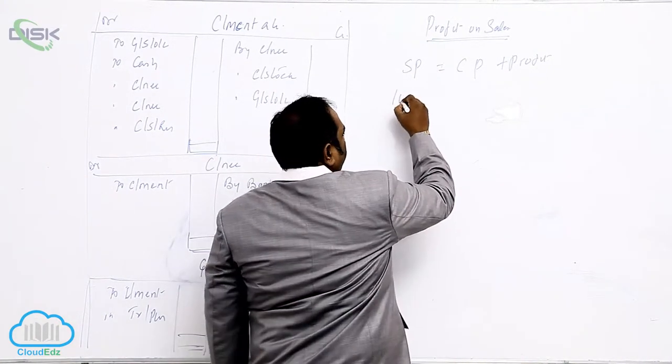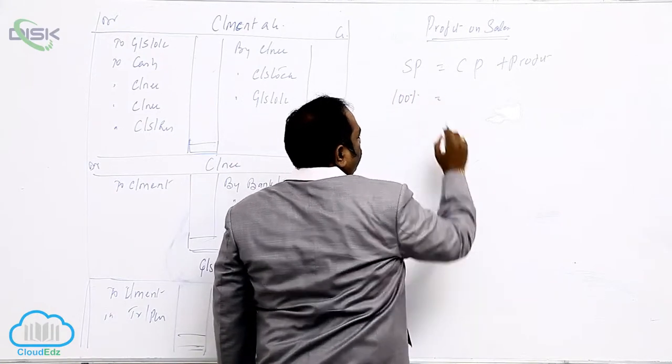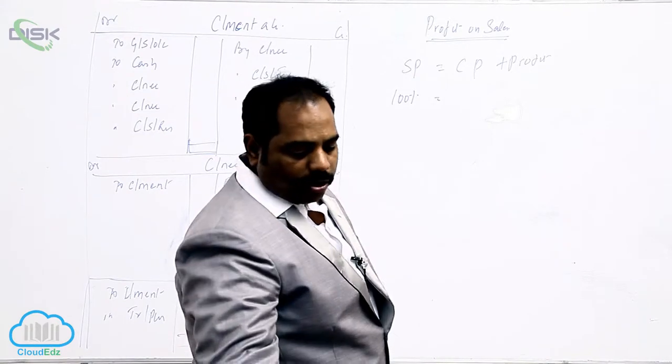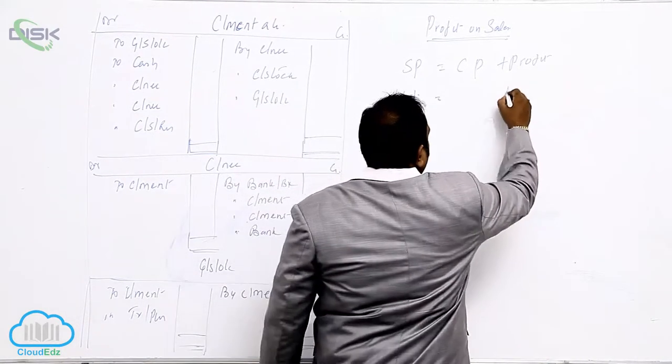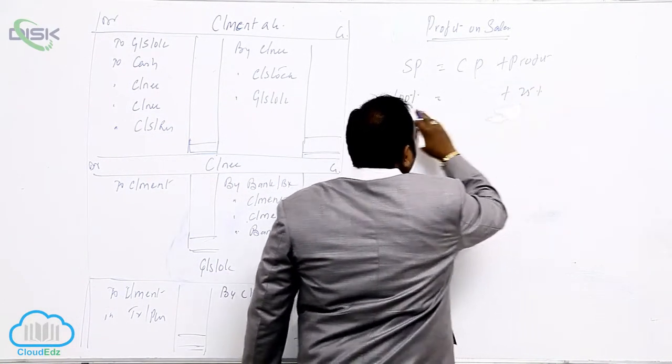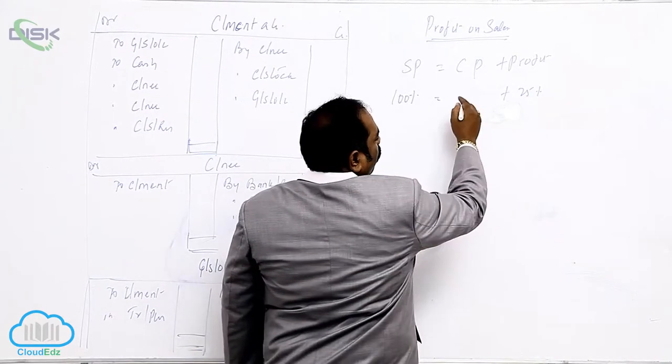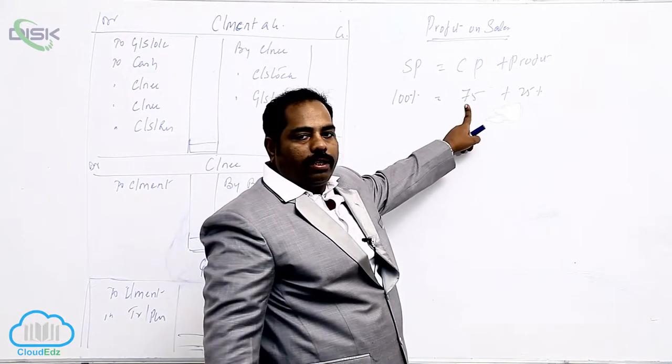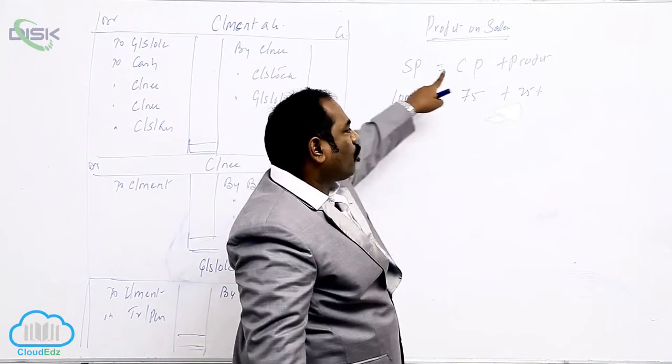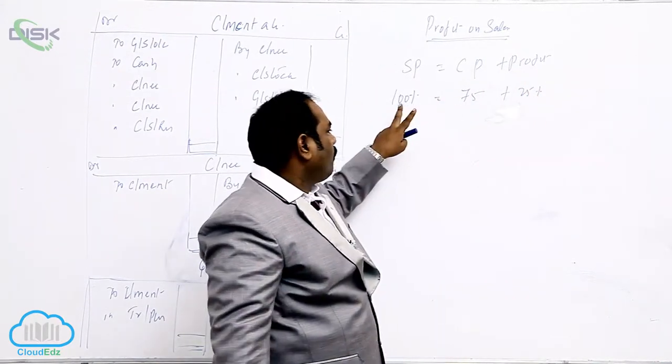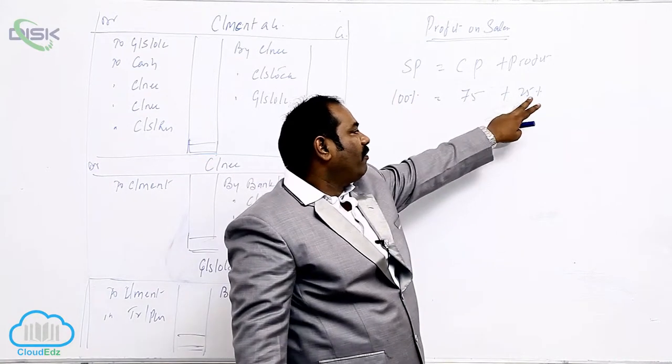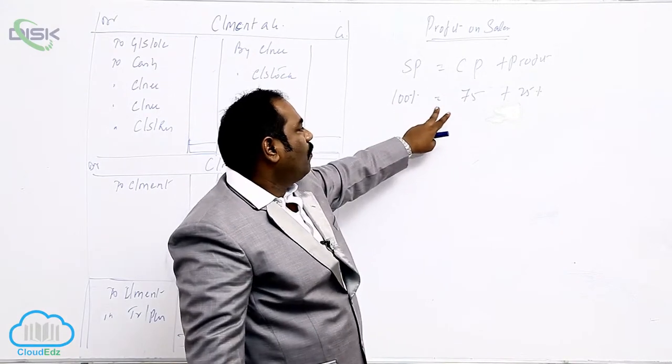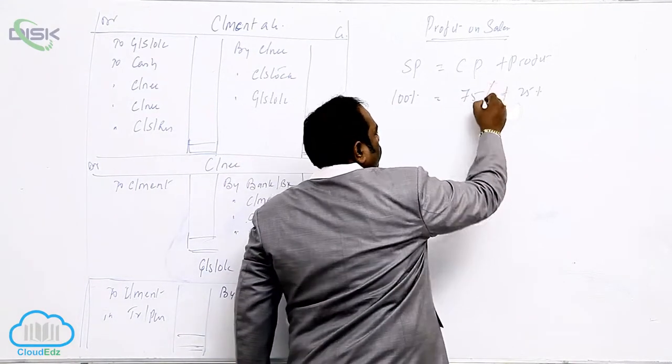If the selling price is 100%, what is the profit said in the problem? 25% profit on sales. Profit is 25%. On 100%, 25% is profit. What will be the cost? The cost will be 75%. Now selling price equals cost price plus profit. He has given you selling price. Profit is 25% on sales. So if your profit is 25%, selling price is 100%, which equals cost price will be 75%.